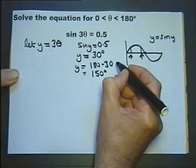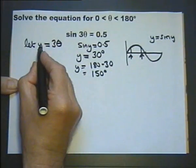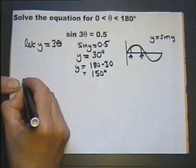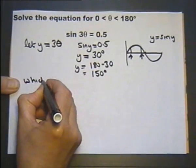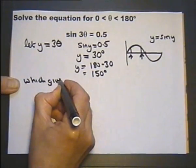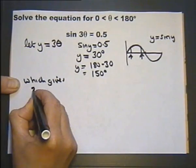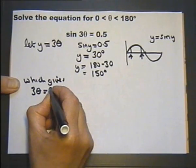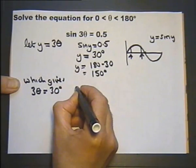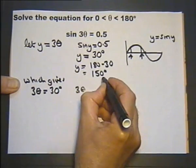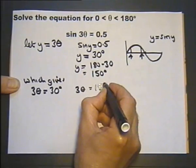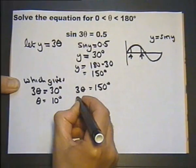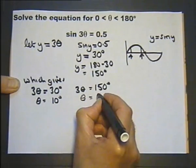Now we can substitute back that y is in fact 3 theta. So that gives 3 theta as being 30 degrees and 3 theta as being 150 degrees. So theta itself is 10 degrees or 50 degrees.